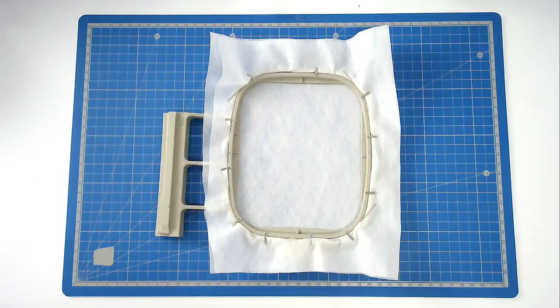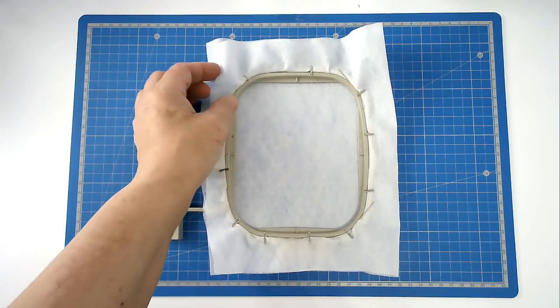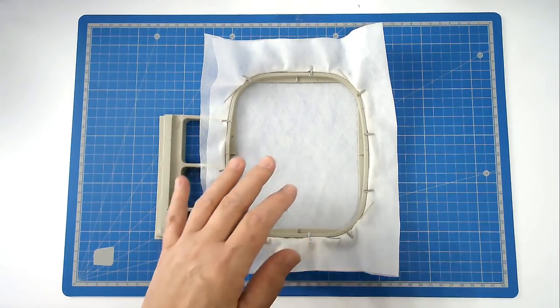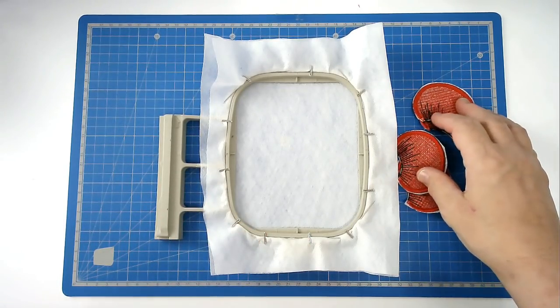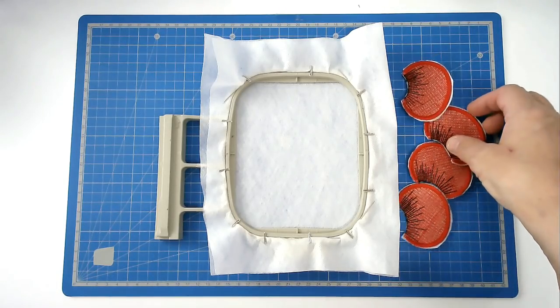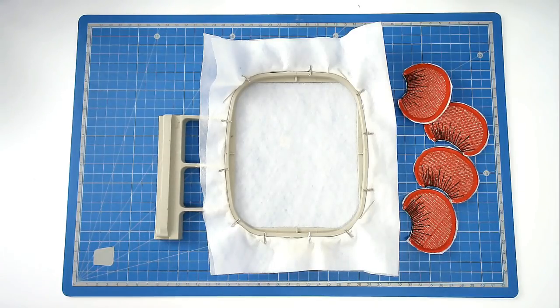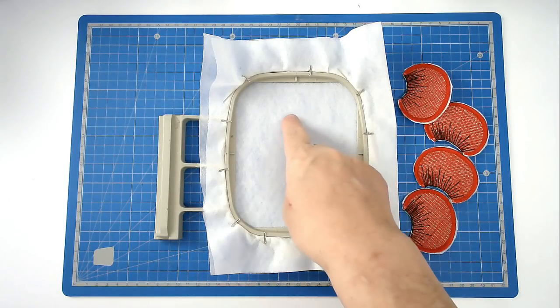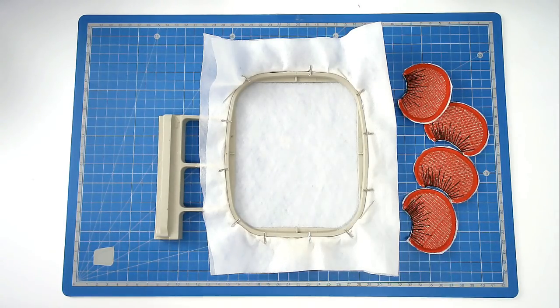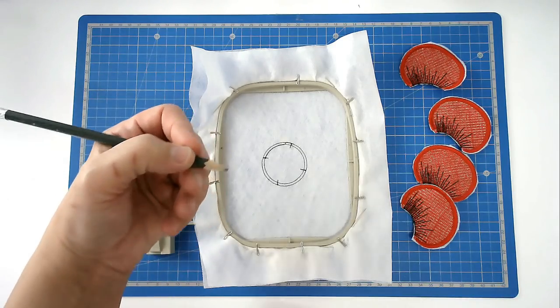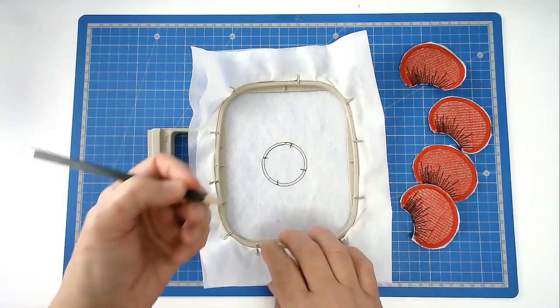We're now going to hoop and pin our two layers of wash away stabilizer in the 4x4 hoop. And we're going to be joining our four petals whilst we stitch out the center. First off you're going to load your black bobbin and thread into your machine and then you're going to stitch round number one and that's going to give you the placement outline for the petals.